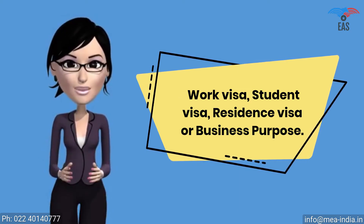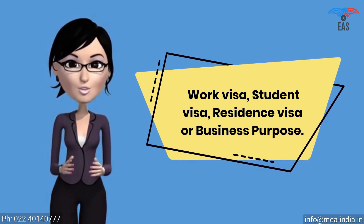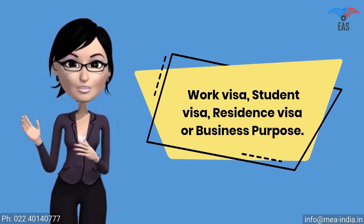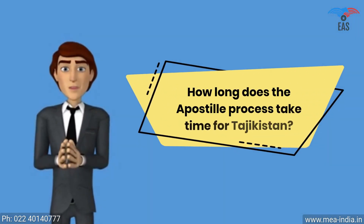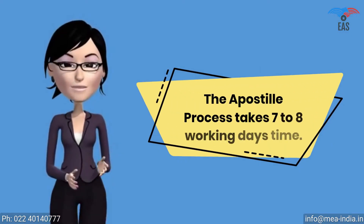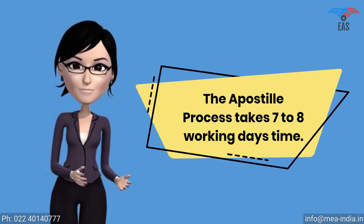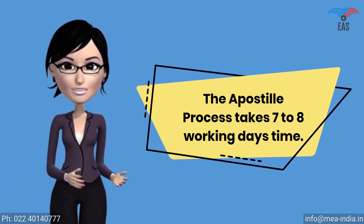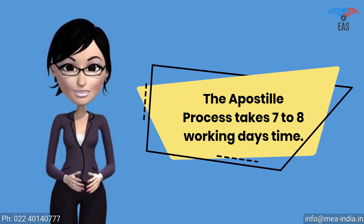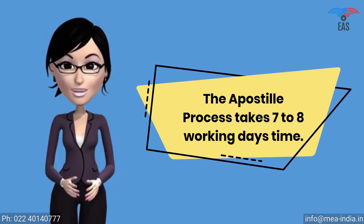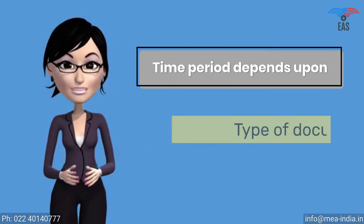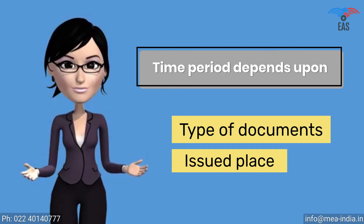Apostille attestation is a report which expresses a conclusion about the reliability of a specified document. How long does the apostille process take for Tajikistan? The apostille process is a multi-step process. It has to be verified by many different authorities such as the Home Ministry or HRD. The MEA can finally apostille the document, so it takes 7 working days, and the time period depends upon the type of documents and the place of issue.